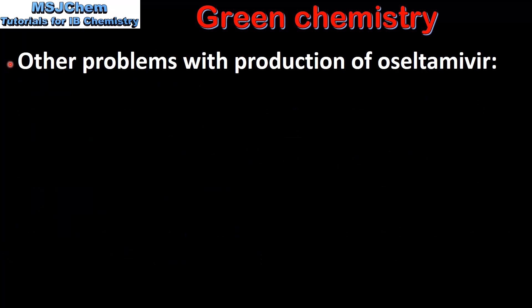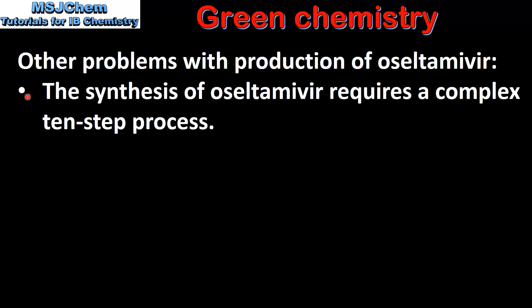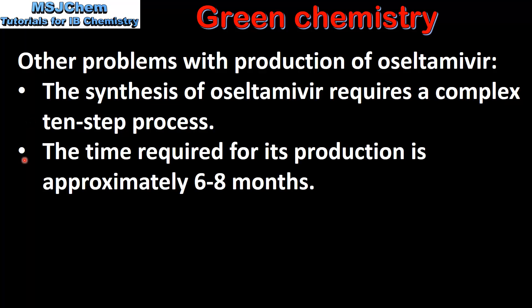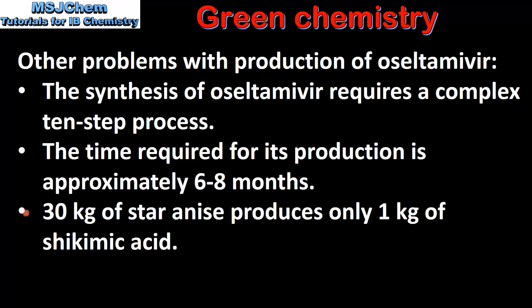Next we look at some other problems with the production of oseltamivir. The synthesis of oseltamivir requires a complex 10-step process. The time required for its production is approximately 6 to 8 months. 30 kg of star anise produces only 1 kg of shikimic acid.